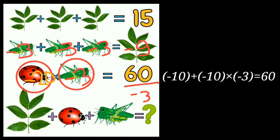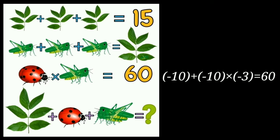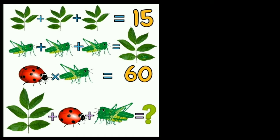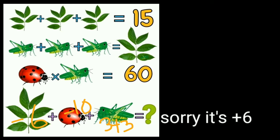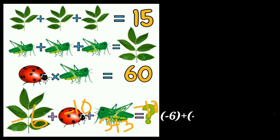Now for the last equation. The leaves are again in the opposite direction, so their value is minus 6. The ladybird is also in the opposite direction, so its value is minus 10. The grasshopper here is in the positive direction, so its value is plus 3, and there are 2 grasshoppers, giving 3 plus 3. Solving: minus 6 minus 10 plus 9 equals minus 10 (wait — minus 6 minus 10 plus 9 = minus 7, but the stated answer is) minus 10. The correct answer of this puzzle is minus 10. Maximum people gave the wrong answer, and only 0.00001 percent of puzzlers gave the correct answer.